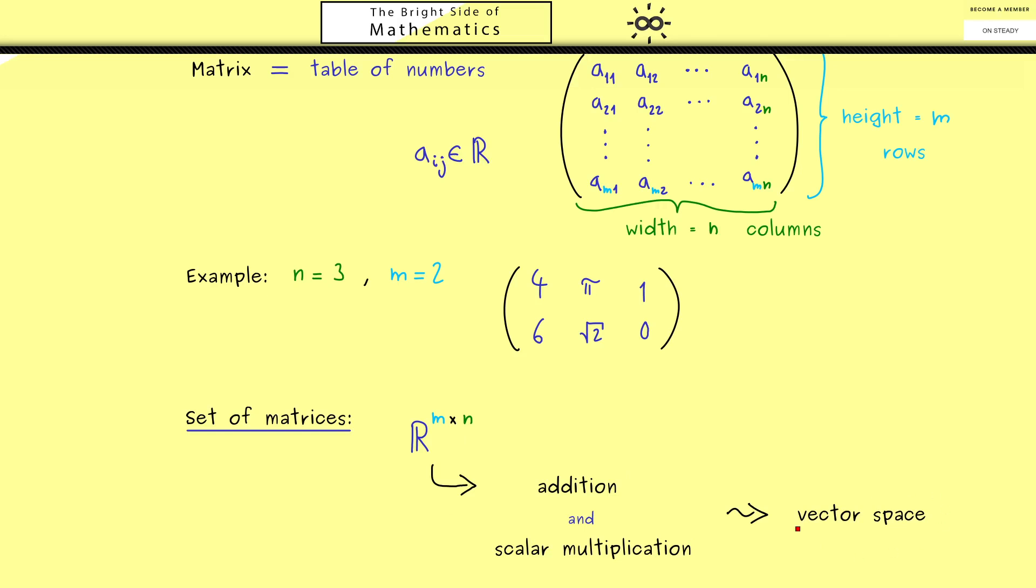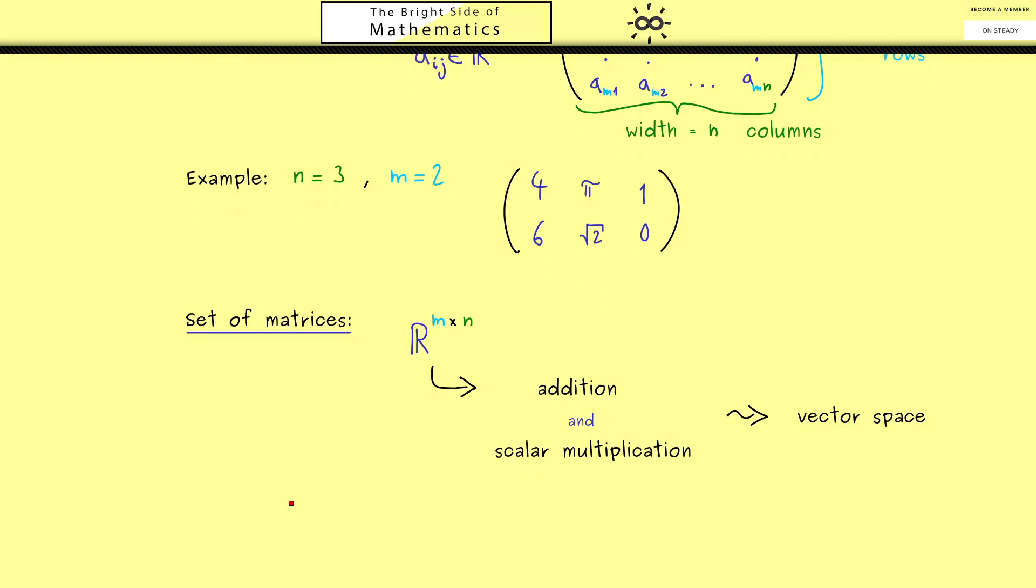That is what we usually do in linear algebra because both things together give us a vector space. In other words, in the end we want to calculate with matrices in the same way as we have calculated with vectors.